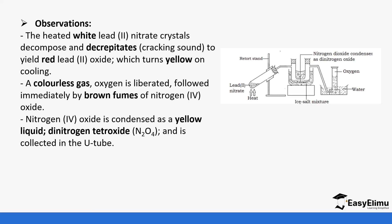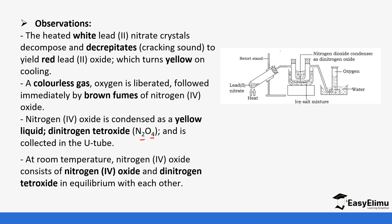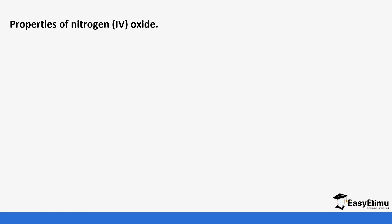Nitrogen 4 oxide condenses as a yellow liquid called dinitrogen tetroxide. 'Dinitrogen' means two atoms of nitrogen and 'tetra' means four atoms of oxygen. At room temperature, nitrogen 4 oxide and dinitrogen tetroxide exist at equilibrium with each other.